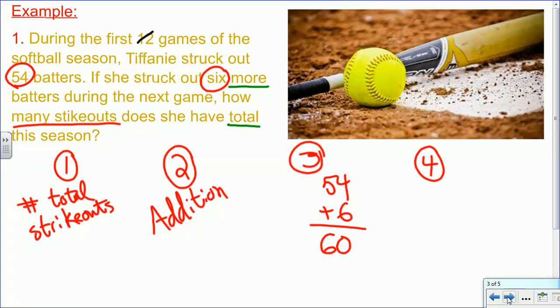Fourth, we have to look back and make sure this makes sense. Does it make sense that we're adding? We can re-read the question and say, well, yes, if we're trying to find the total for the season, then yes, we should add 54 that she already had, and 6 more that she just got. This makes sense. So we're good.